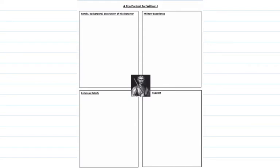On your next clean page in your book, you're going to need at least three quarters of a page — try and aim for an entire page. Draw out this table. You don't need to draw William in the middle, but put at the top of your page 'A Pen Portrait for William' and then separate your page into four boxes with these four titles: family and background, description of his character, military experience, and religious beliefs and support. Pause the video and do that now. In a second we're going to go through a variety of information together and you're going to make notes to build up a pen portrait of William.